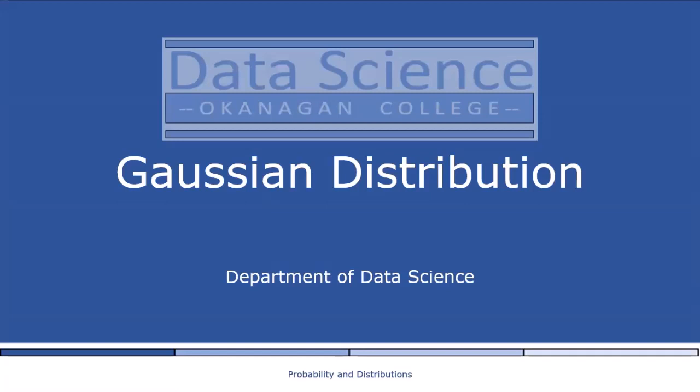In particular, when we talk about machine learning, we use it to define the likelihood and prior for linear regression, and consider a mixture of Gaussians for density estimation. There are many other areas of machine learning that also benefit from using a Gaussian distribution.